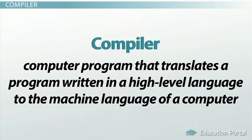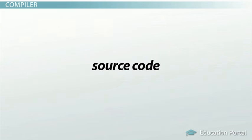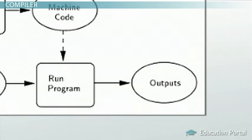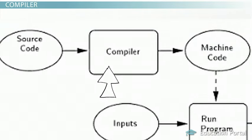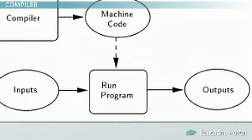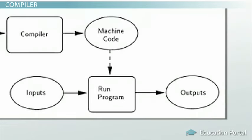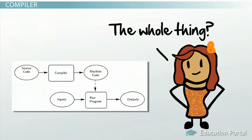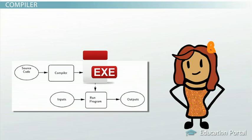A compiler is a computer program that translates a program written in a high-level language to the machine language of a computer. The high-level program is referred to as the source code. The compiler is used to translate source code into machine code, or compiled code. When the compiled code is executed — referred to as running the program — the program processes the input data to produce the desired output. The entire source code needs to be compiled before the program can be executed. The resulting machine code is typically a compiled file, such as a file with an .exe extension. Once you have a compiled file, you can run the program over and over again without having to compile it again.